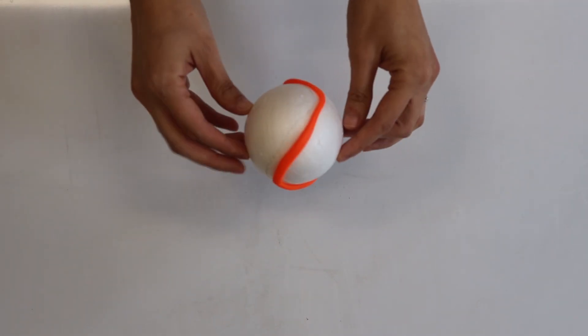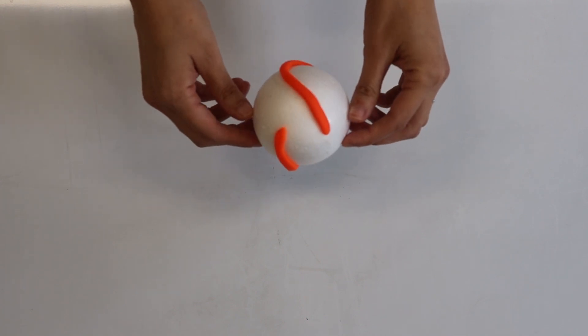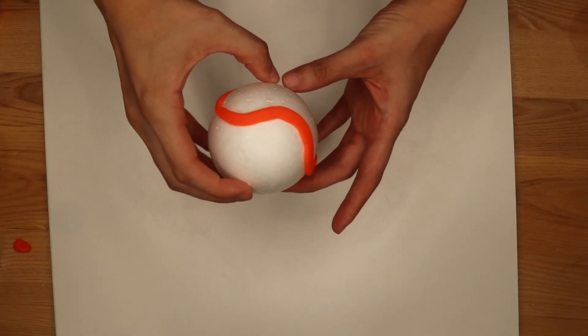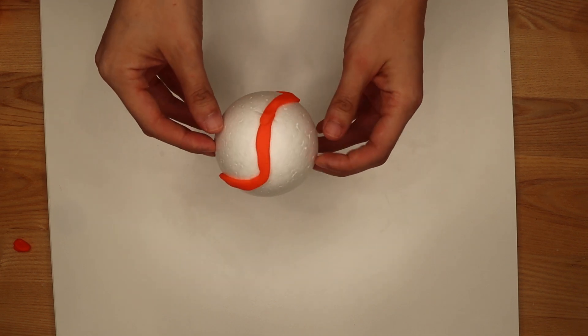You can see here that the sphere is the right size, but the path still doesn't close on itself. And two, even if you did find a line that makes a closed loop, what are the odds that it just happens to cut the sphere in exactly half?